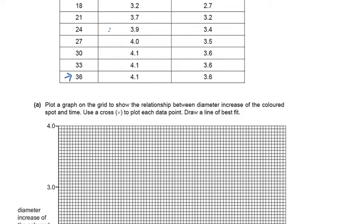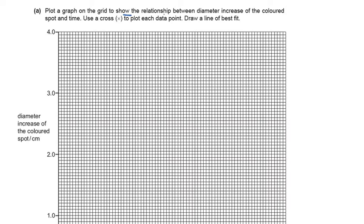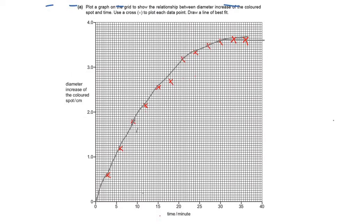We are given a grid to plot a graph showing the relationship between the diameter increase of the colored spot and time. Use a cross to plot each data point and draw a line of best fit. Here are the plotted points from the data given in the table. The line of best fit should actually be a smooth curve drawn with a pencil — my curve has gone a bit zigzag on screen, which is not ideal.